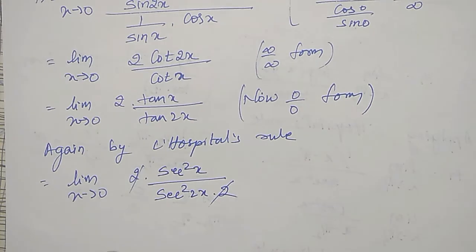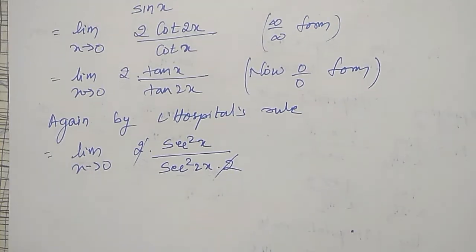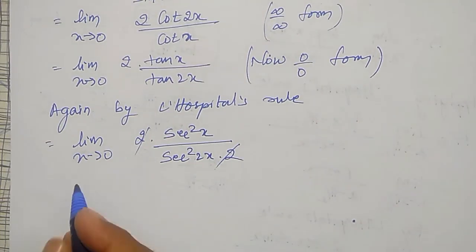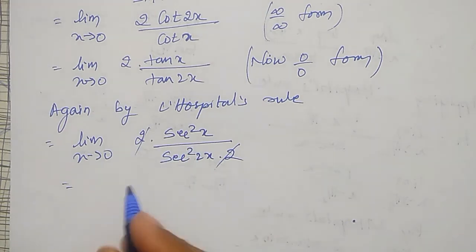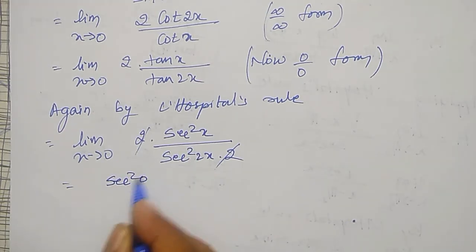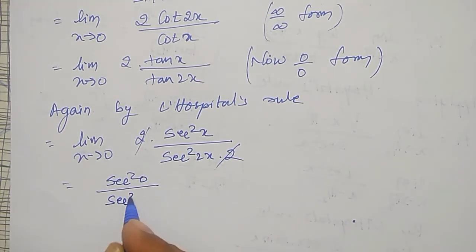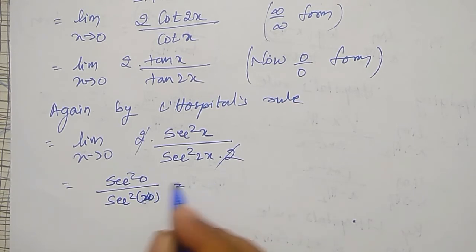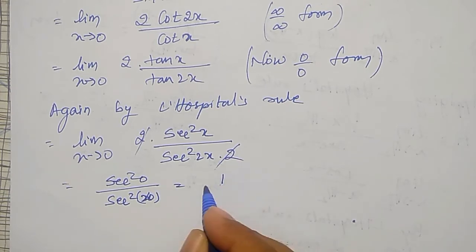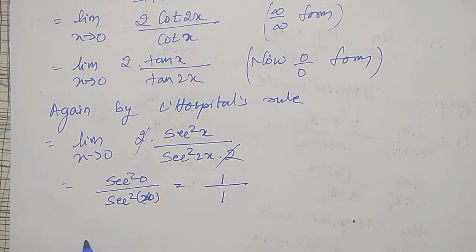This 2 and 2 cancel. Let me check the finite value: at x equal to 0, it is sec² 0 divided by sec² 0. Sec 0 is 1 and sec 0 is also 1, therefore I am going to get k equal to 1.